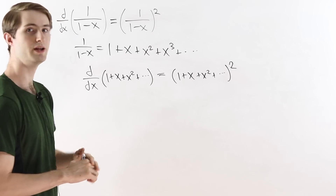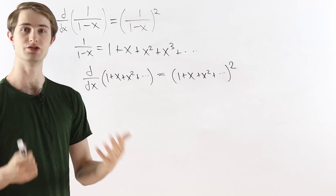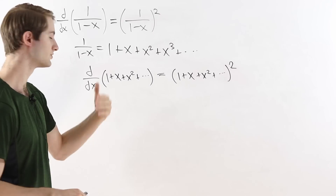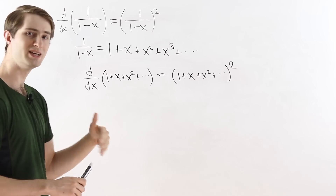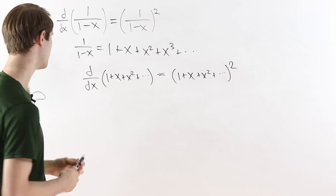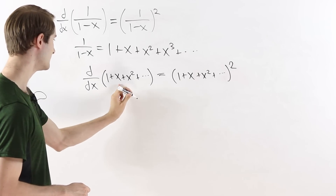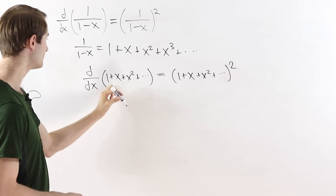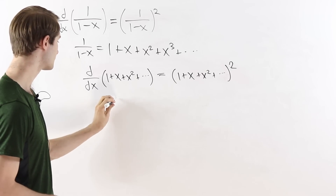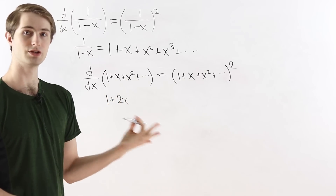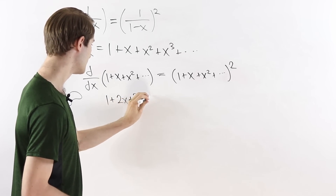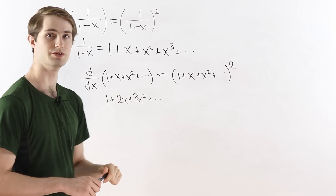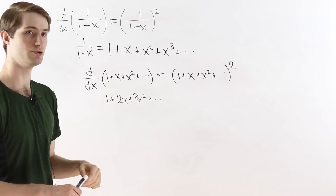To prove this equation we can compute each side separately. On the left we're taking the derivative of an infinite series — a sum of powers: 1, x, x squared, x cubed, and so on. We can differentiate each term individually using the power rule. The derivative of 1 is 0; the derivative of x is 1; the derivative of x squared is 2x; the derivative of x cubed is 3x squared; then 4x cubed, and so on to infinity.